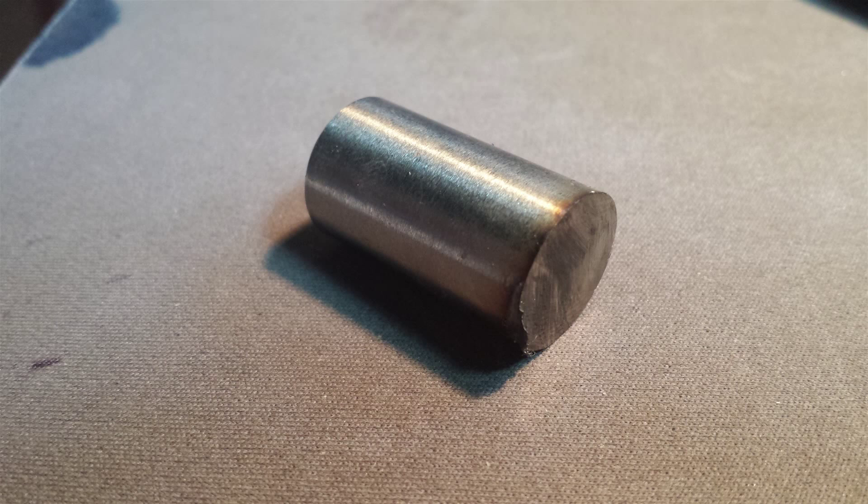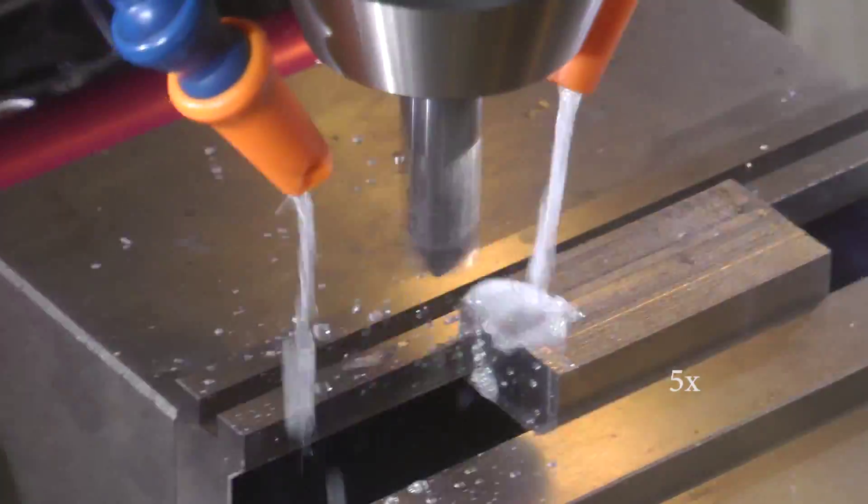In order to get that long reamer to fit in my Z-axis travel, I had to cut some of the back of it off with a cutting wheel.